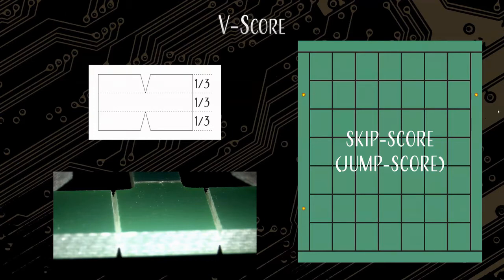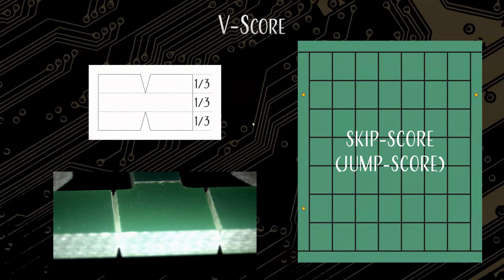Those little green things you see on the picture — those are actually fiducials. What a fiducial is, is a registration mark. When you put it on the pick-and-place machine, it reads that and knows exactly what your coordinates are, and knows exactly where to place each part on each individual board.